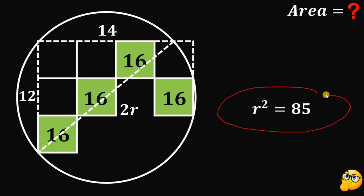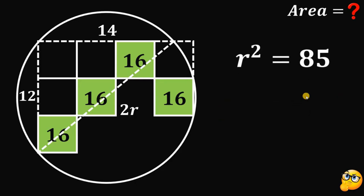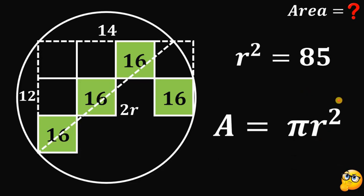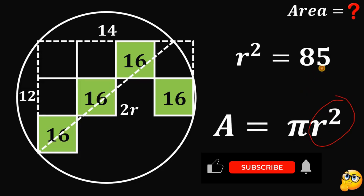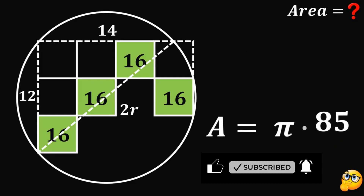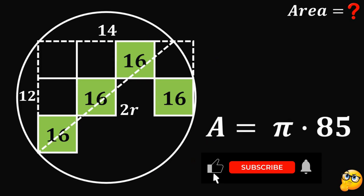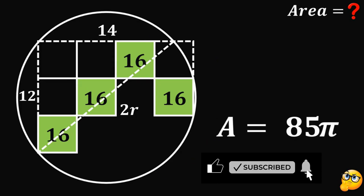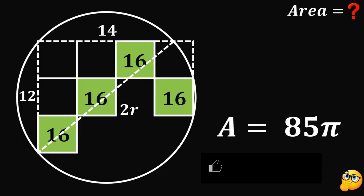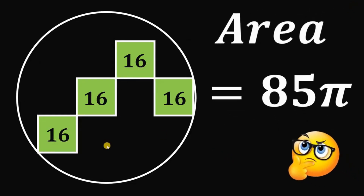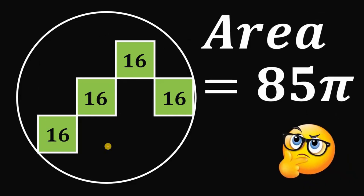Dividing both sides by 4, we get r squared equals 340 over 4, which is simply 85. We know the area of the circle is computed using the formula pi times r squared. Since r squared equals 85, we can replace r squared with 85. So the area of this circle must be equal to 85 times pi square units.